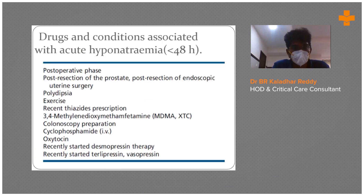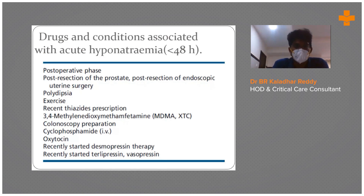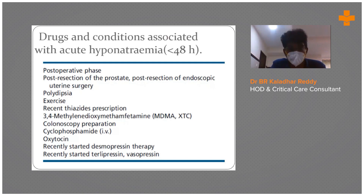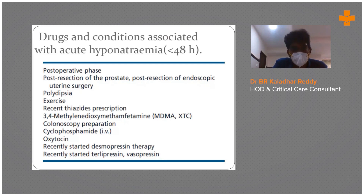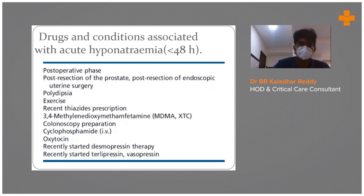Drugs and conditions associated with actual acute hyponatremia include the post-operative phase and TURP — transurethral resection of the prostate. During TURP, large volumes of glycine or mannitol are given, causing hypervolemic dilutional hyponatremia. Other causes include polydipsia, exercise, MDMA, colonoscopy preparation, cyclophosphamide, oxytocin, thiazides, and vasopressin.